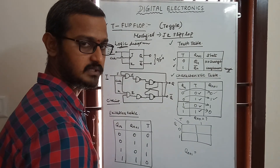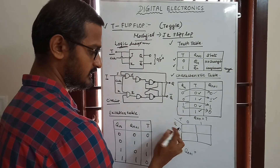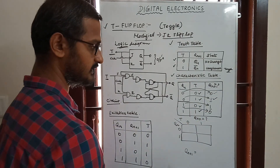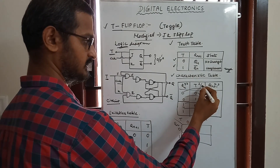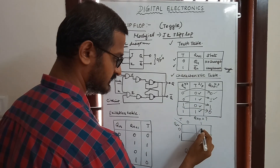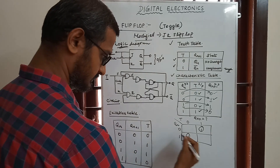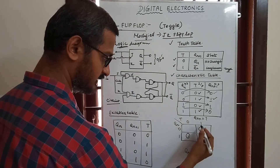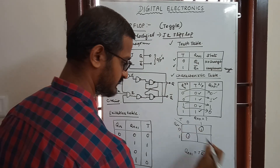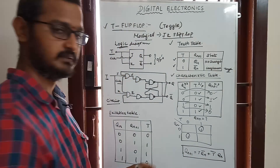Now let's create the characteristic equation. We want to make a K-map with two variables: Qn and T. For Qn+1, the values alternate: 0, 1, 0, 1. We group the ones to get the characteristic equation of the T flip-flop: Qn+1 = Qn bar·T + Qn·T bar. This is the characteristic equation of the T flip-flop.